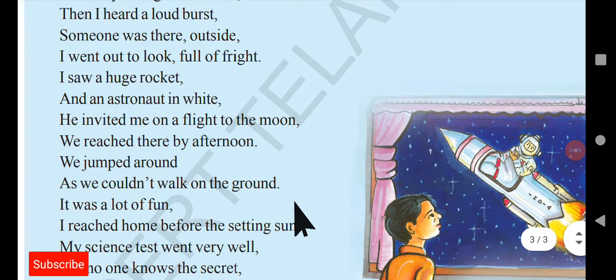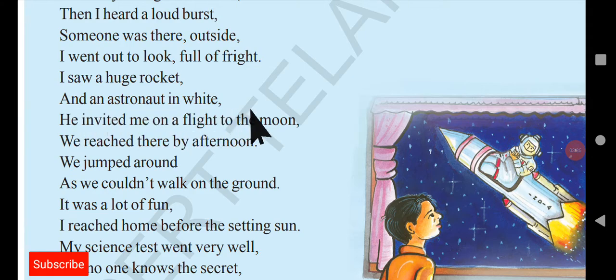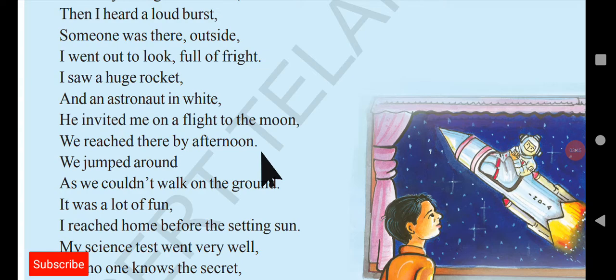'I saw a huge rocket and an astronaut in white, he invited me on a flight to the moon, we reached there by afternoon.' When the boy went outside to see who it was, there was an astronaut dressed in white sitting on a rocket. That person invited this little boy, and they both went to the moon, reaching there the next day afternoon.